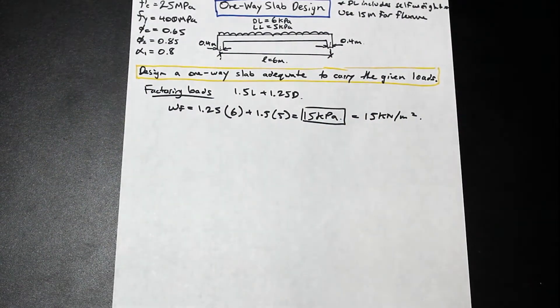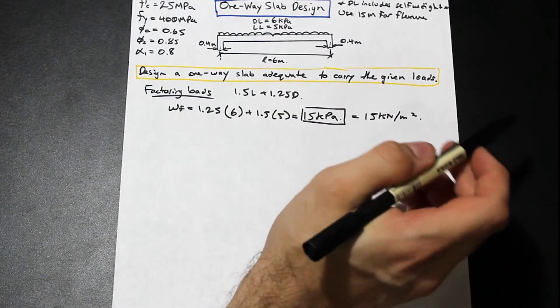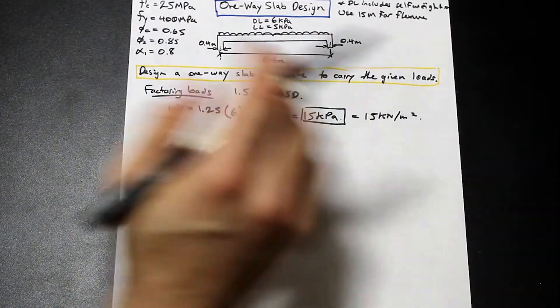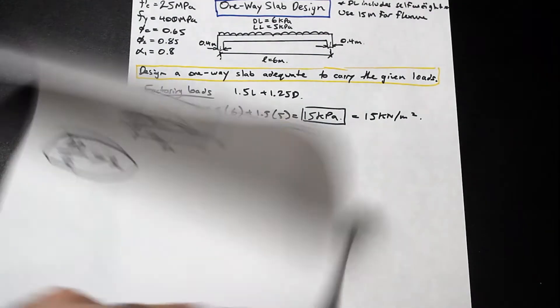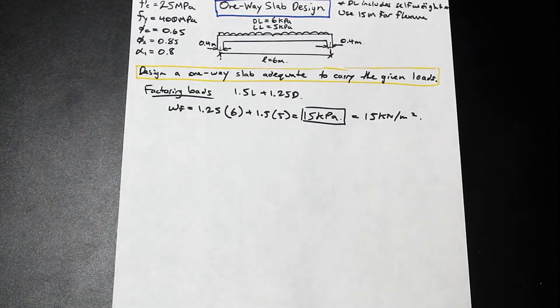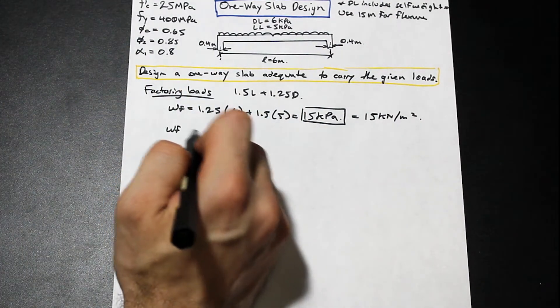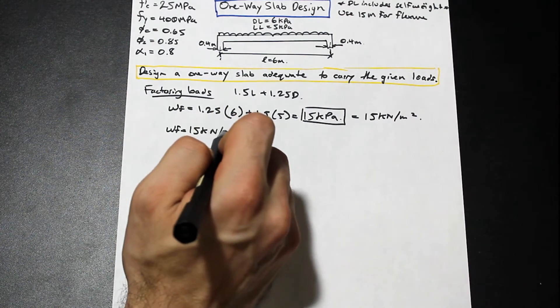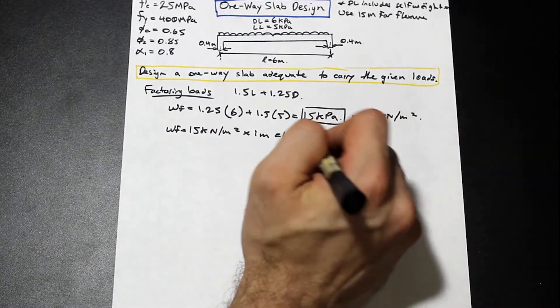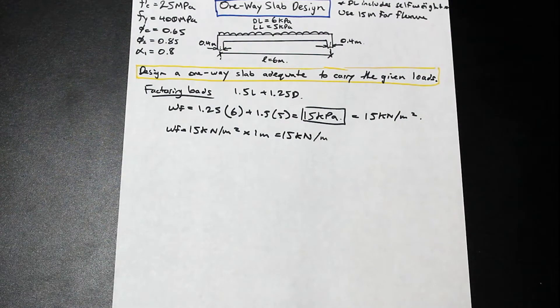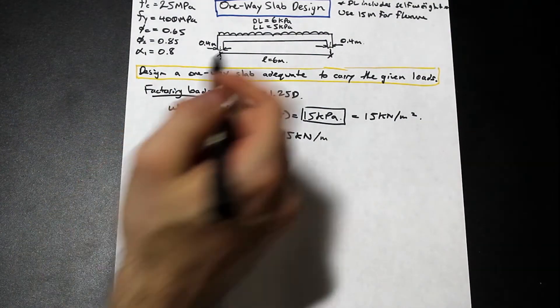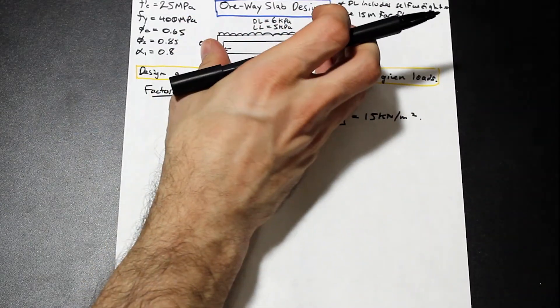Perfect. So now, that is a kilonewton per meter squared unit. That's spread out across the whole slab, but we want to get that in terms of a linear load. We're going to multiply that by 1 meter, because as we said before, we want to get the load in terms of a 1 meter strip. So let's go ahead and do that now. Our WF now is simply 15 kilonewton per meter squared times 1 meter strip. That's the depth. That's going to give us 15 kilonewton per meter. And that is the factored uniform load per meter of slab width. So now we can go ahead and this slab, in this case, we just have kind of one panel and it's simply supported.